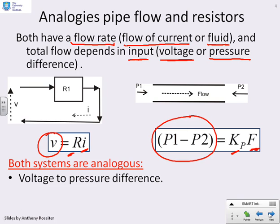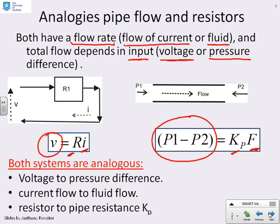So voltage is analogous to pressure difference. The current flow is analogous to the fluid flow. And the resistor, capital R, is analogous to the pipe resistance, which here I've called k subscript p.